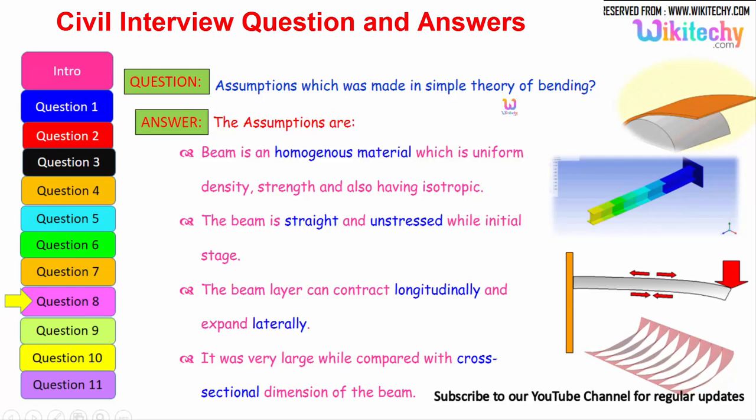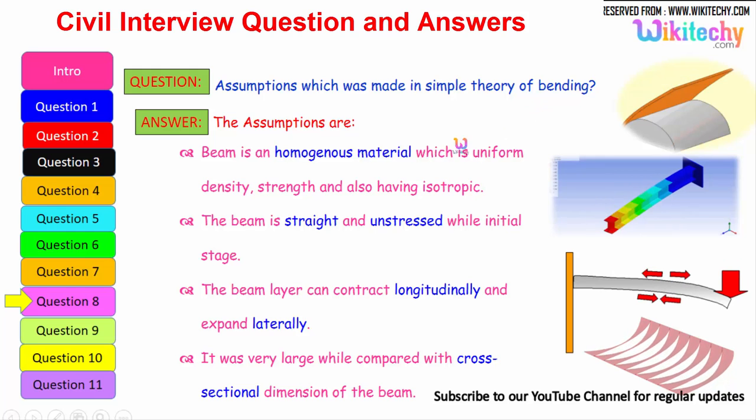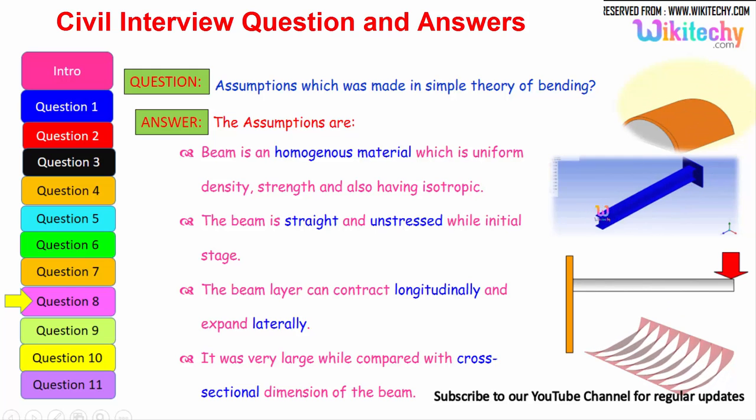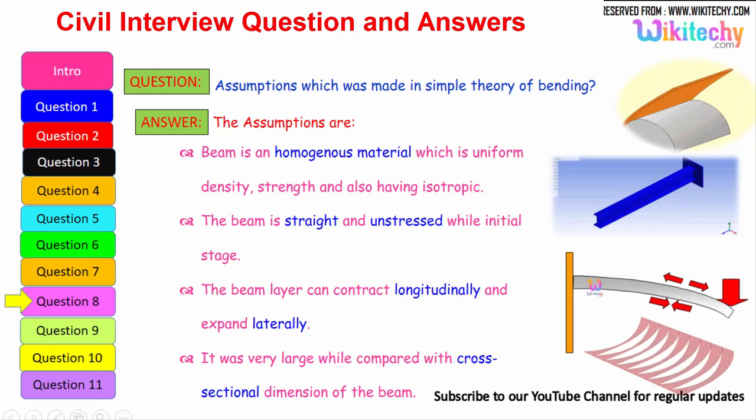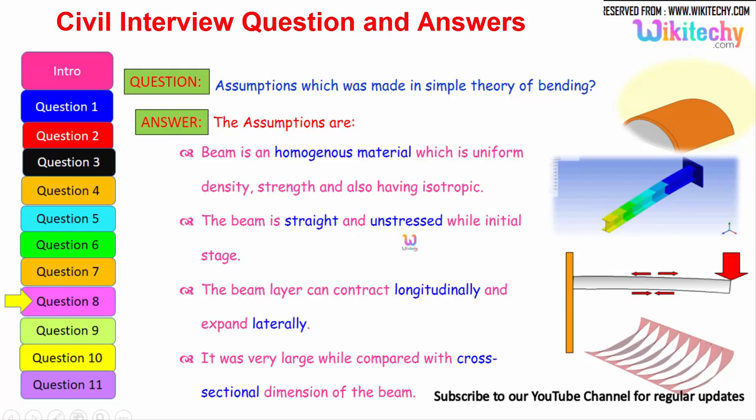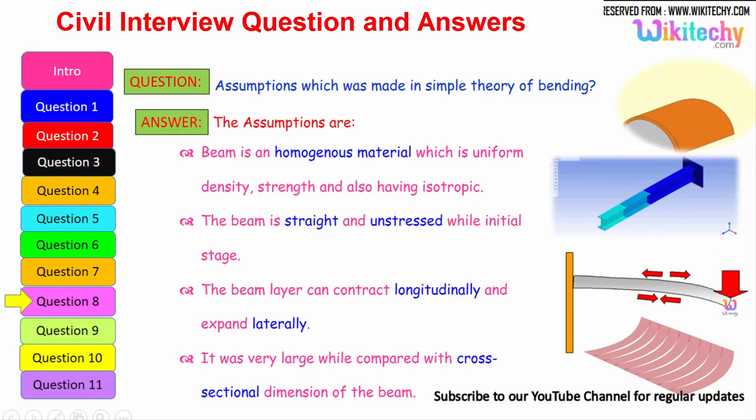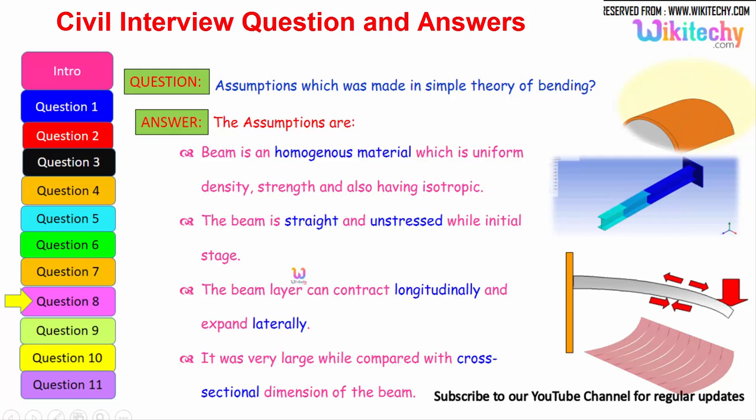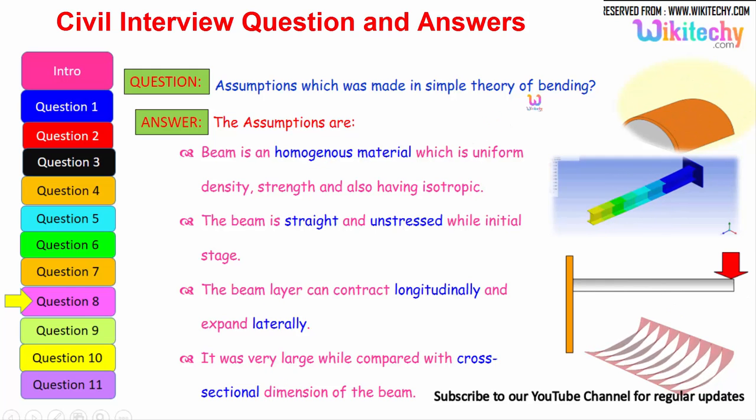What is the assumptions which was made in simple theory of bending? That is the question. The assumptions are: Beam is of homogeneous material which is uniform density. It should be uniform density, strength and also having isotropic. So the beam is straight and unstressed while initial stage. That is the second assumption. So the beam can contract longitudinally and expand laterally. It was very large when compared with the cross-sectional dimension of the beam. It should be very large when compared with the cross-sectional dimension of the beam. These are some of the assumptions we have to make for the theory of bending.